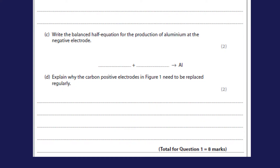Part c — write the balanced half equation for the production of aluminium. That's the half equation showing electrons at the negative electrode where electrons are gained: Al³⁺ + 3e⁻ → Al, worth two marks. The final part of this question, for two marks: explain why the carbon positive electrodes need to be replaced. Oxygen forms at the positive electrode and reacts with the electrode, so they corrode and therefore need to be replaced.